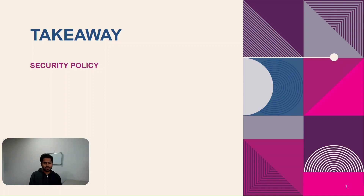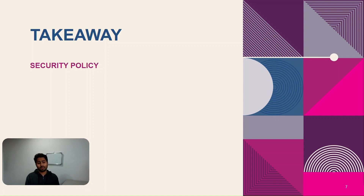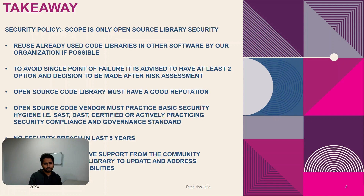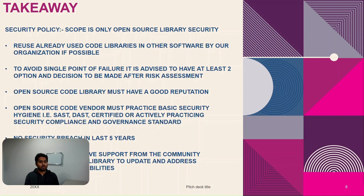Now I'll be sharing the security policy. This can be used as a baseline — it's not the silver bullet to solve all problems of securing open source libraries, but these points can be developed further, specific to your organization. The scope is only securing open source code libraries — not open source software, applications, or anything else.